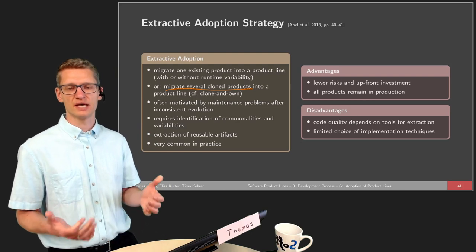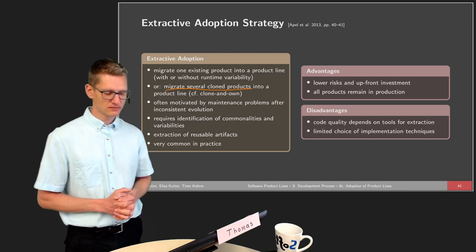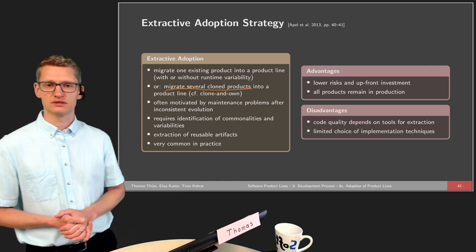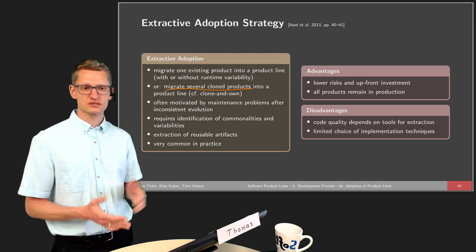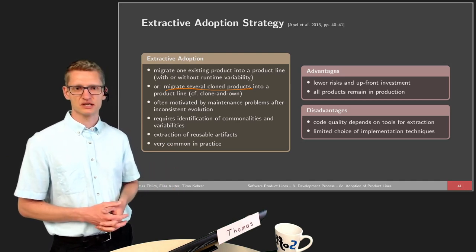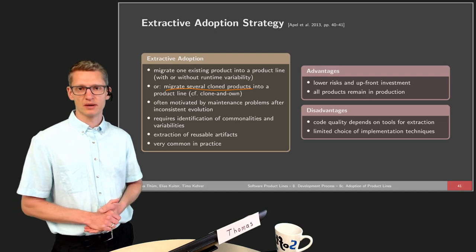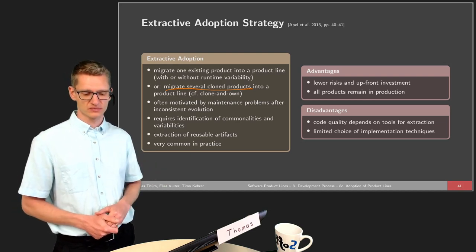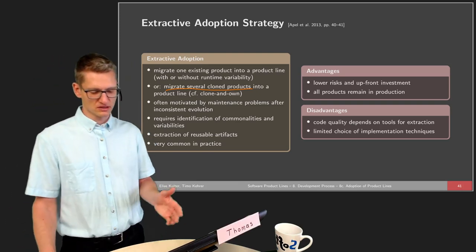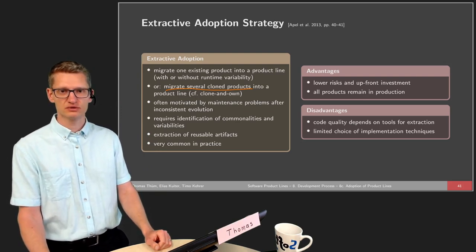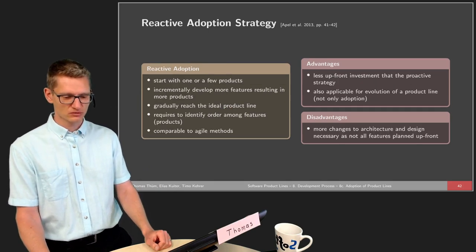The extractive strategy also limits the choice of implementation techniques. It's relatively easy to use preprocessors by annotating parts of the source code, but this is harder for approaches requiring extensive pre-planning. For instance, a framework with plugins would be hard to achieve through many small refactorings from existing artifacts. So even though the extractive strategy is frequently applied in practice, it also has disadvantages, which is why there is a third strategy.